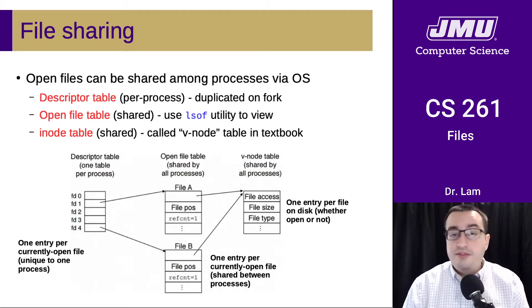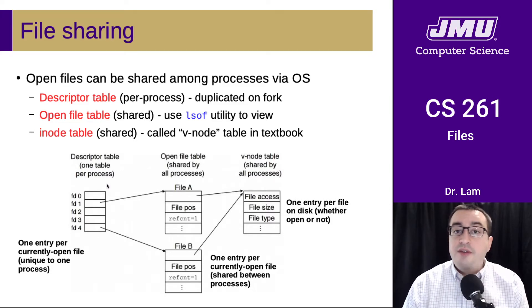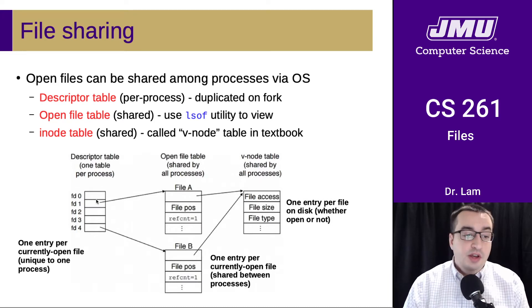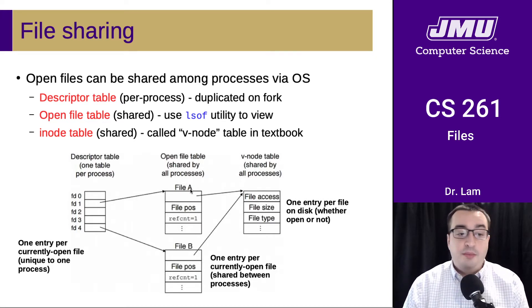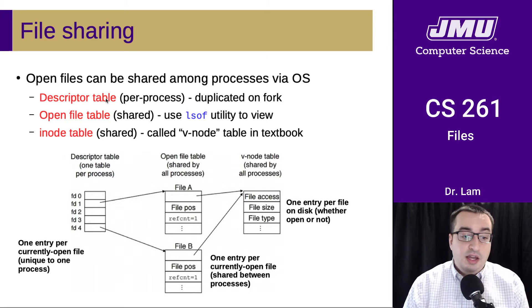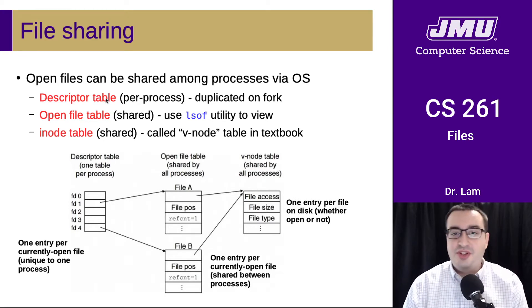There are three different kinds of tables. The first is a descriptor table — every process has its own descriptor table. These are pointers from particular file descriptors to entries in the open file table that the operating system maintains. So if you have a process that has various open files, some of them may include the standard files, which we'll talk about in a second.